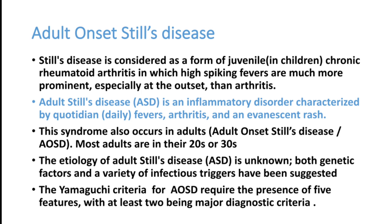It is an inflammatory disorder characterized by daily fever, arthritis, and rashes all over the body. These rashes occur when the patient is having fever. The syndrome occurs mainly in adults, which is why it is called Adult Onset Still's Disease, though it can also occur in younger children. Most adults affected are in their 20s and 30s.